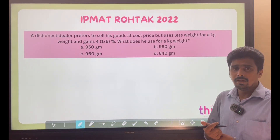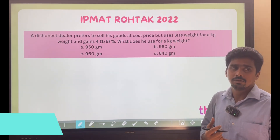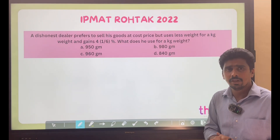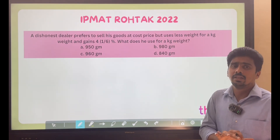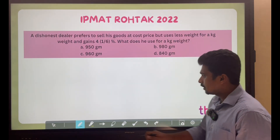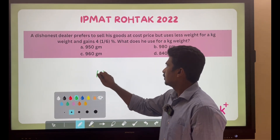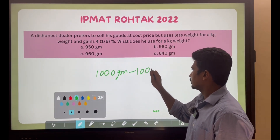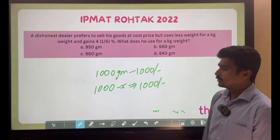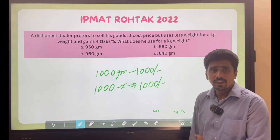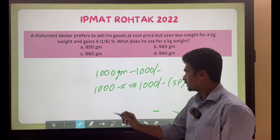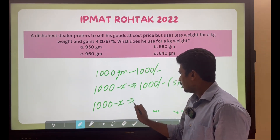Before you start solving the question, understand whether you are getting a clear idea of the approach or not. If not, skip it and return in the second or third round. In the exam hall, solve questions you can answer immediately. Here, a dishonest dealer prefers to sell goods at cost price. Say he bought 1000 grams at 1000 rupees. But he is selling 1000 minus X grams at 1000 rupees — giving X grams less.